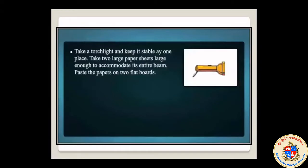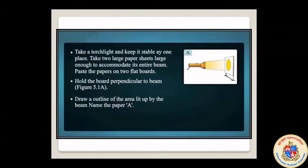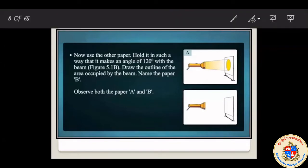Let's start one activity. Take a torch light and keep it stable in one place. Take two large sheets, large enough to accommodate its entire beam. Paste the paper on two flat boards. Now hold the board perpendicular to the beam and draw the outline of the area lit up by the beam — name that paper A. Now use the other paper and hold it such that it makes an angle of 20 degrees with the beam. Draw the outline of the area occupied by the beam and name the paper B, then observe both papers.